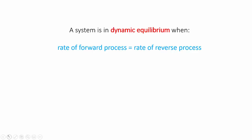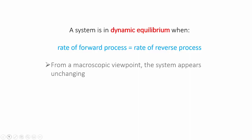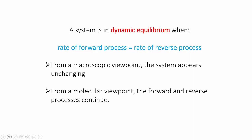A chemical system is in dynamic equilibrium when the rate of the forward process equals the rate of the reverse process. From a macroscopic viewpoint, a system in equilibrium will look unchanging, but at the molecular level, the forward and reverse processes — whether they're physical or chemical changes — are churning away continuously. In this video, we'll focus on chemical reactions.